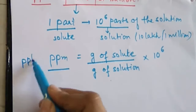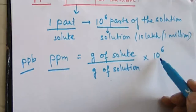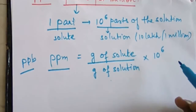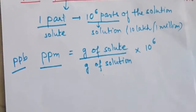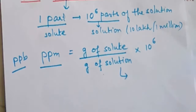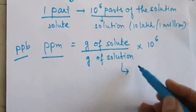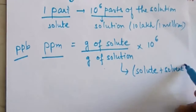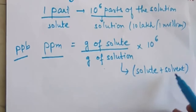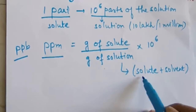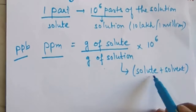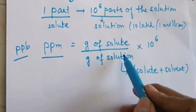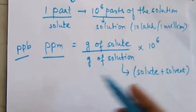If we use parts per billion, we multiply by 10 to the power 9 — how many parts of the solute are present in 1 billion parts of the solution. The term 'solution' means it is the mixture of solute plus solvent. So in the calculation, when you are given the weight of the solvent, you must add the weight of the solute to get the weight of the solution.